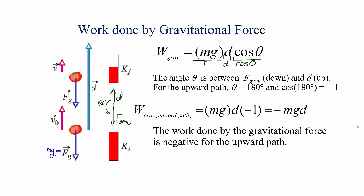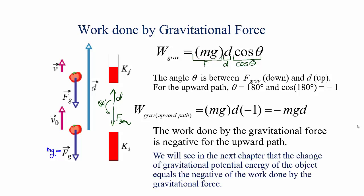Again, as something is moving up where the force is against the motion, the work done will be negative. We're going to see later on that this work done by gravity is going to be related to gravitational potential energy, but right now all we're looking at is the work done by this gravitational force.